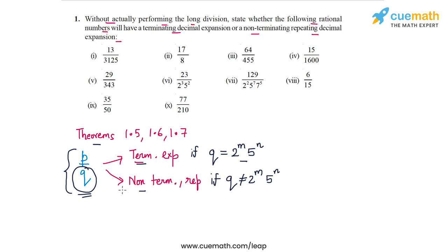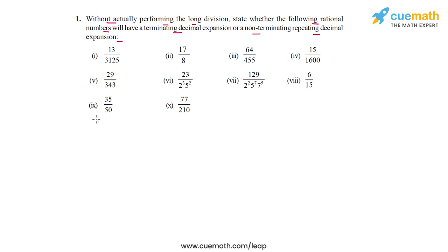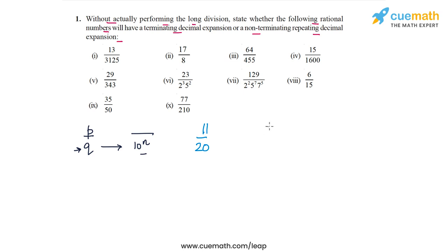Let's discuss why these theorems work. The key idea is that when the prime factorized form of Q in P/Q has only twos and fives, you can convert this into a power of 10, rewriting P/Q as an equivalent rational number where the denominator is a power of 10. For example, take the rational number 11/20. The denominator 20 has the prime factorized form 2 × 2 × 5.